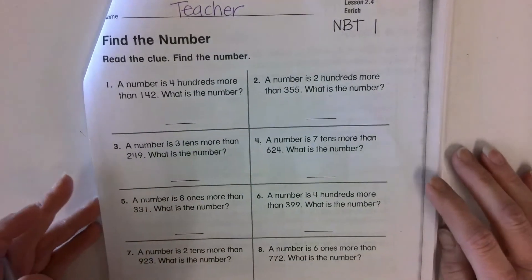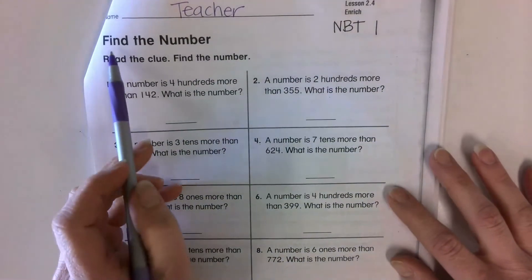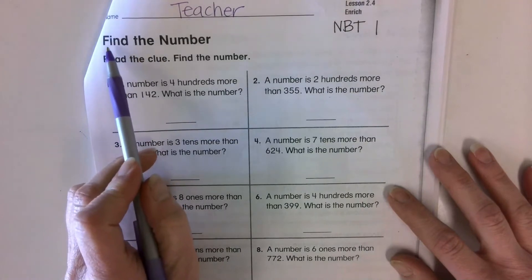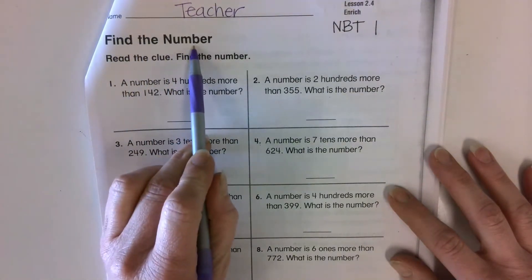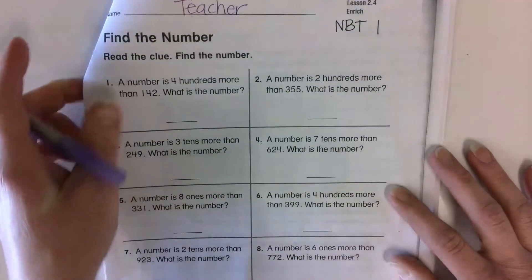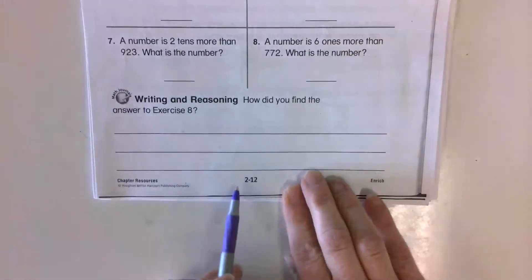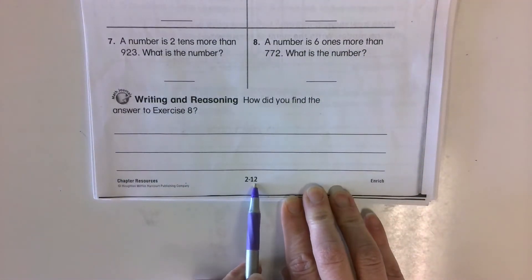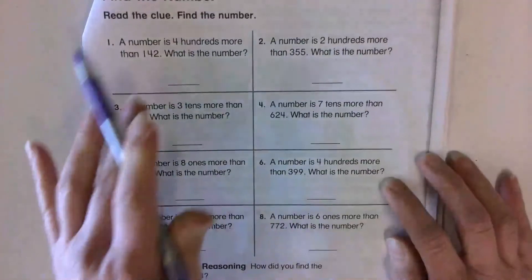Okay, in your folder, you're going to find the page that says Find the Number. And down at the bottom here, it says 2-12, Find the Number.